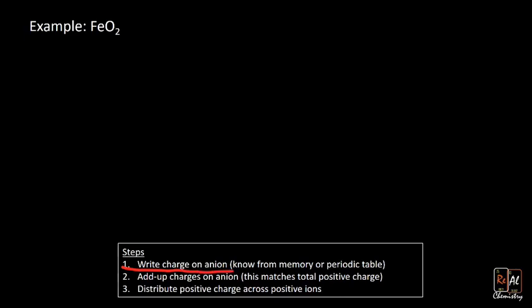First, we're going to write the charge on our anion. So oxygen, if I look at the periodic table, I know that it's two minus. And further, I know that I have two of these. How do I know I have two of these? Well, there's a two right there. So that two is telling me there's two oxygens. And then I'm going to add up the negative charge. Two and two gives me a minus four.